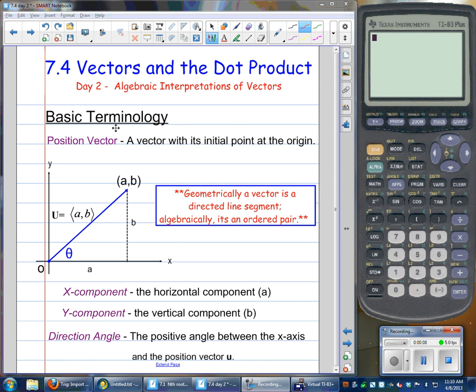Just some quick terminology here. One's going to be what we call a position vector. So we're going to actually place these vectors on the coordinate plane with their initial point at the origin. We just kind of assume then that the force is being applied to the origin point.